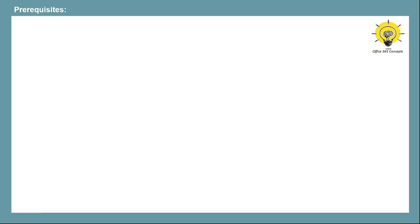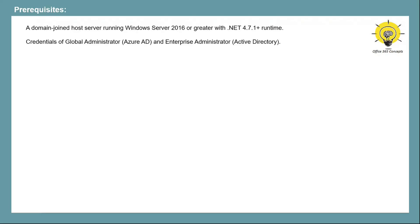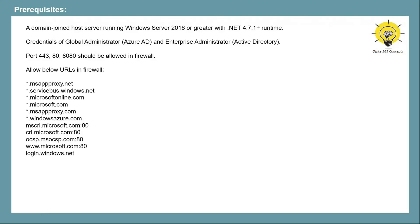For installation of the agent, you need a domain-joined server machine running on Windows Server 2016 or later, along with .NET 4.7.1 runtime or later. You need credentials of an Azure AD tenant global administrator and an enterprise administrator of your on-premise Active Directory. You need to allow port 443, port 80, and port 8080 in your firewall, and you also need to allow specific URLs in your network that will be used by the agent to communicate with Azure Active Directory and to verify certificates.